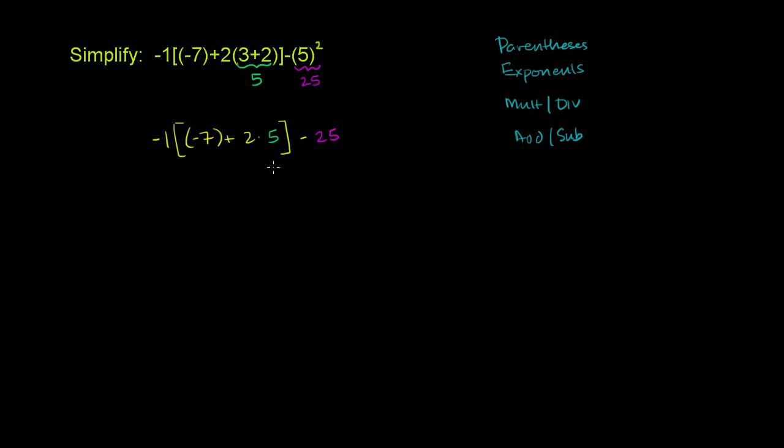Now, this thing, we want to do multiplication. You could say, hey, wait, I still have a parentheses here. Why don't I do that first? But when you just evaluate what's inside of this parentheses, you just get a negative 7. It doesn't really change anything. So we could just leave this here as a negative 7.